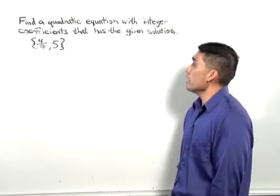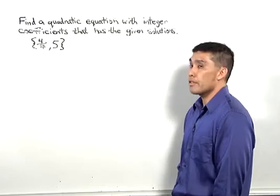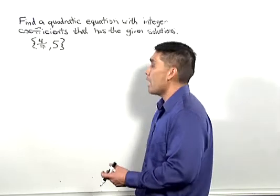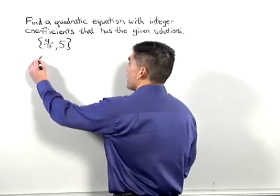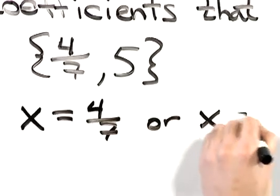Find a quadratic equation with integer coefficients that has the given solutions, 4/7 and 5. If the solutions are 4/7 and 5, that implies that x equals 4/7 or x equals 5.